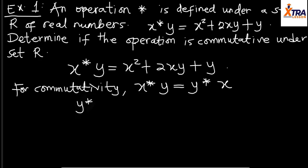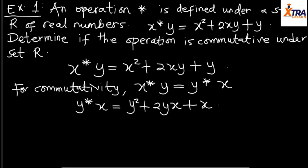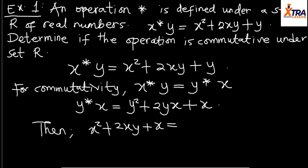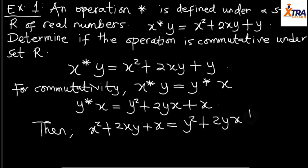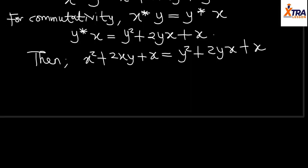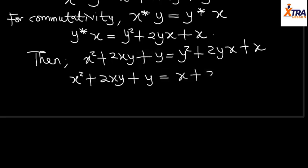To find y★x, my x will take my y's position and my y will take my x's position. So instead of x², I'll have y², giving: y★x = y² + 2yx + x. Since they're supposed to be the same thing, I'll compare both: x★y = x² + 2xy + y, and y★x = y² + 2yx + x, which can be rearranged as x + 2xy + y².